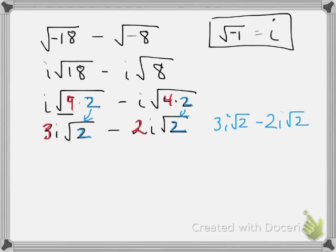And what you guys will hear me say often is these are like objects. They're like paperclips or keys. So, I have 3i square root of 2, and I subtract 2i square root of 2. So, how many i square roots of 2 do I have? I have 1i square root of 2, and that is my final answer.